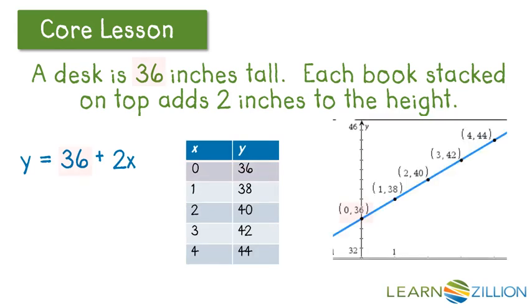Where is the y-intercept for each one of those? It's highlighted in the red blocks. So we see that 36 is our y-intercept, and that's the height of the desk without any books stacked on top.